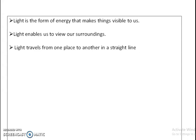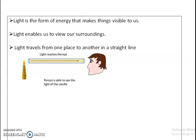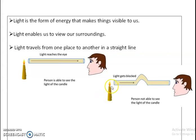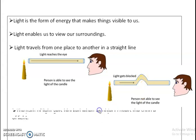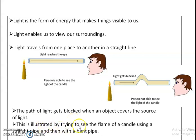Light always travels in a straight line. How can we know that? It can be proved by a simple experiment. There is one candle kept here and a person is viewing it through a straight pipe. If he views the candle with a straight pipe, he can see the light. But if the same candle is viewed through a pipe which is a bit twisted, the light gets blocked. That shows that light travels only in a straight line. The path of light gets blocked when the object covers the source of light, illustrated by this simple experiment using a candle and a pipe.